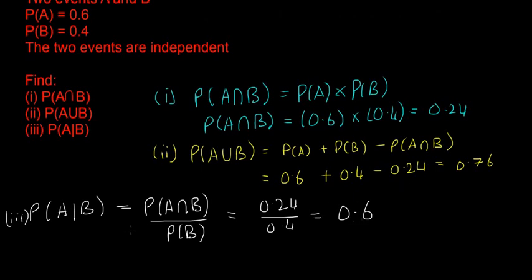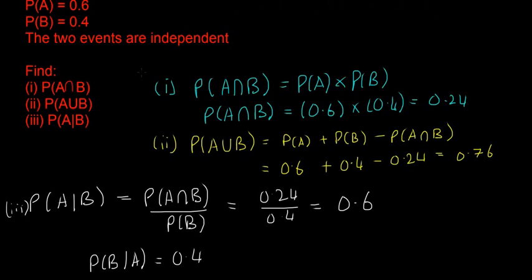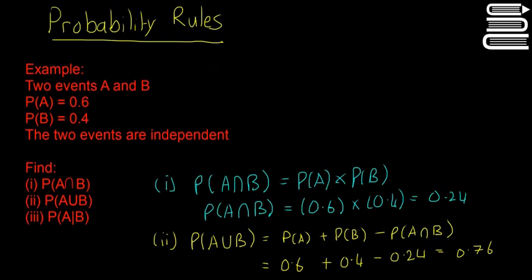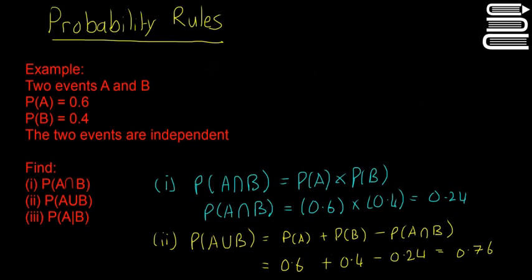They could ask you to explain that in an exam. By the same reasoning, P of B given A should be the exact same, still 0.4, because the events are independent. I just wanted to show you how you can use these probability rules and mix them together.